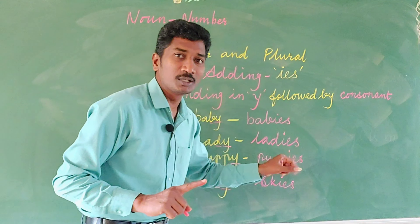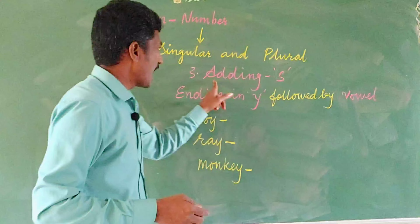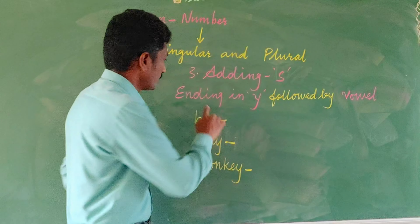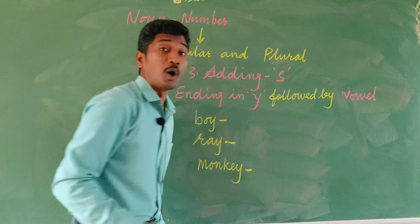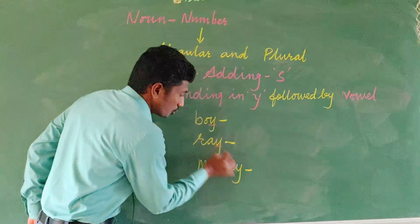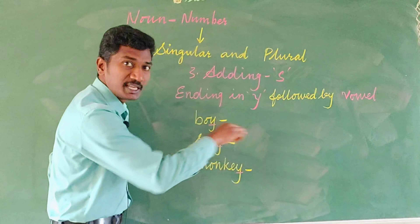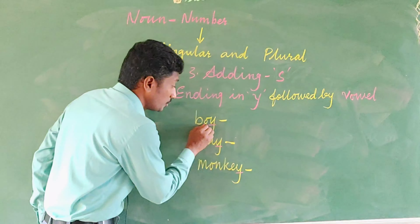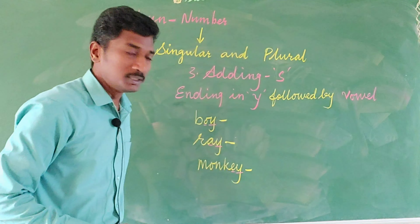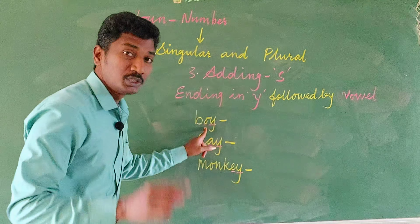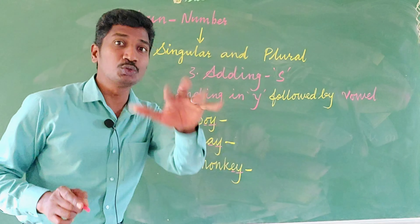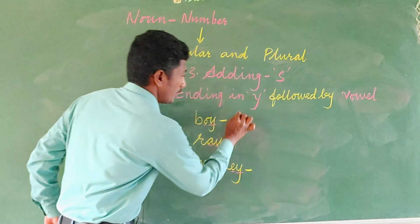Now the next exceptional rule: adding 's'. It is also ending in 'y', but followed by a vowel. These words are also ending in 'y', as I said, but they are following a vowel. A, e, i, o, u are the vowels. So this 'y' is following the vowel, and what we do is just add 's' to make plural. For example, boys.